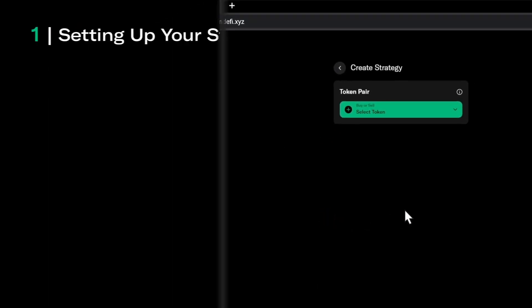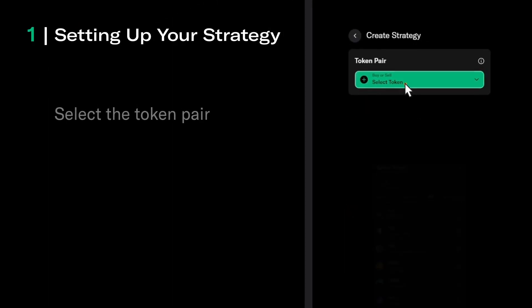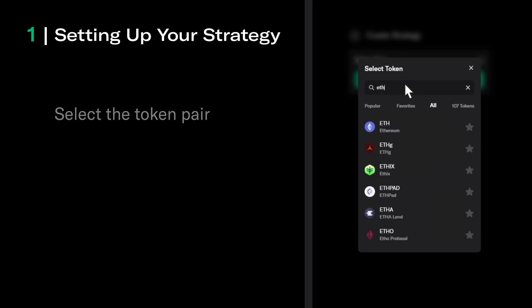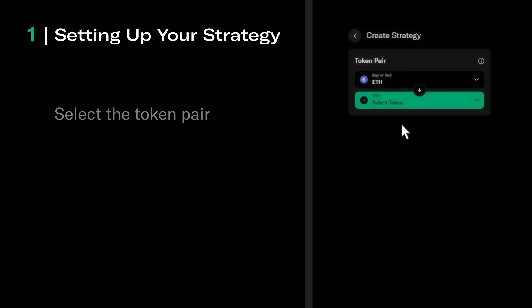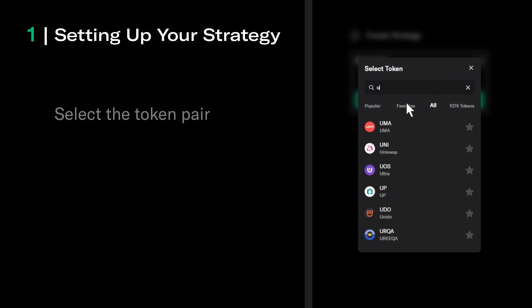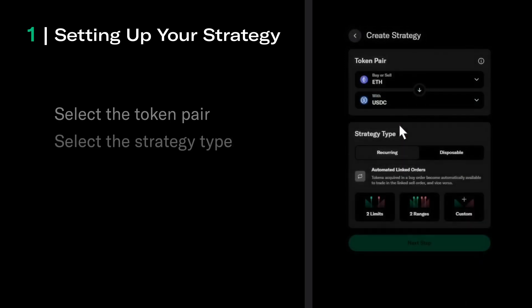First, we have to select the token pair. Any pair of standard ERC20 tokens is valid. The buy or sell token, also known as the base token, is the one we would like to buy low and sell high — in our case, Ethereum. The quote token is the token we would like to denominate rates in, in our case USDC.